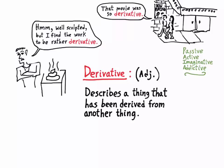You may have noticed, by the way, that the word adjective also ends in I-V-E, but it's not an adjective, it's a noun. There are also nouns that end in I-V-E, but these nouns generally seem to come from adjectives.